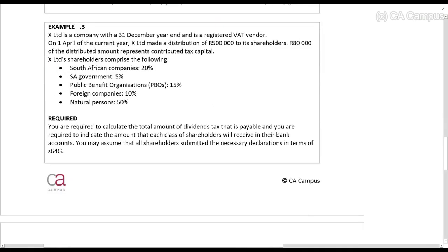This next calculation is something I'd expect you to see more often. Excellent is a company with a 31 December year end and is a registered VAT vendor. On 1 April they made a distribution of R500,000 to its shareholders. R80,000 of that is contributed tax capital, so R500,000 gets paid out.